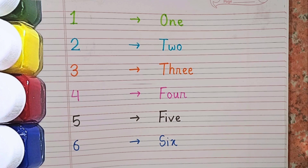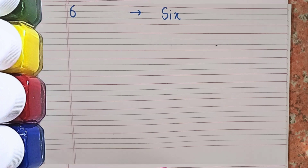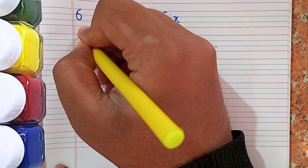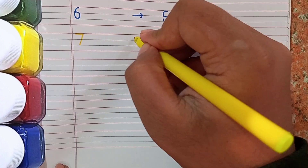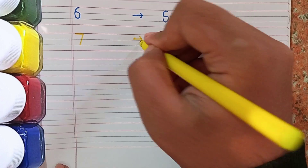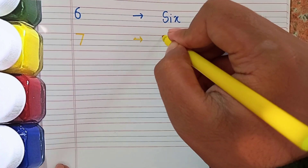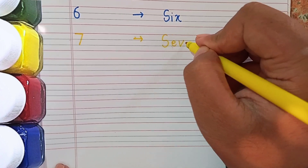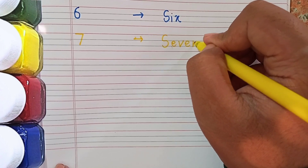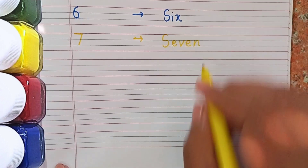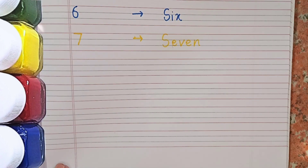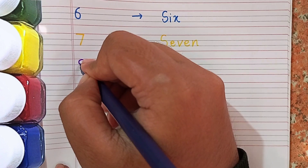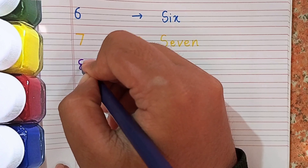After 5 I am going to write 6. The spelling of 6 is S-I-X. After 6 the next number will be 7. This is 7 and the spelling of 7 is S-E-V-E-N. Remember the spelling: S-E-V-E-N.